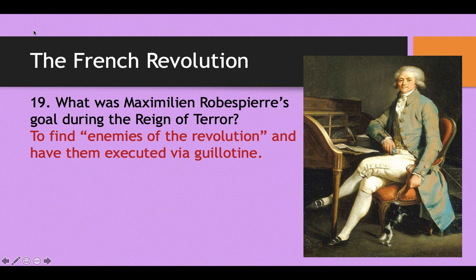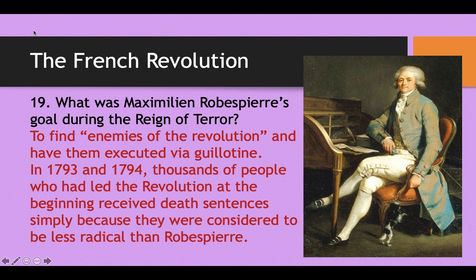For about a year, Robespierre governed France as basically a dictator, and his rule was known as the Reign of Terror. His goal was to find what he called enemies of the revolution and have them executed via guillotine. In 1793 and 1794, thousands of people who had actually led the revolution at the beginning received death sentences simply because they were not as radical as Robespierre — even people who had stormed the Bastille back in 1789.